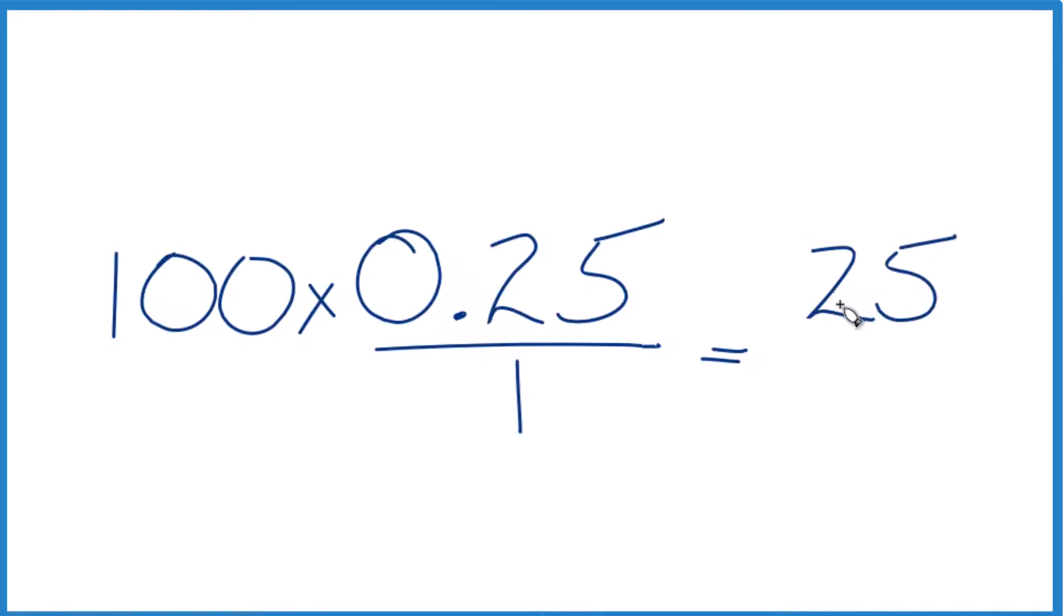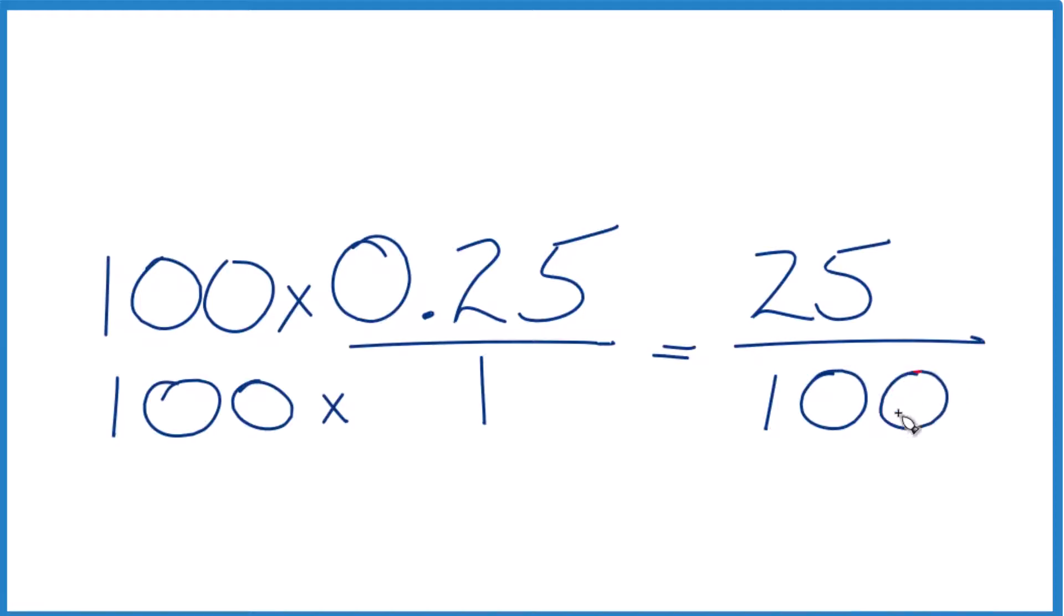But when we do this, we did it to the numerator, we also have to do it to the denominator. So we'll multiply the denominator here times 100 and that gives us 100 times 1 is 100. And now we have our fraction. We can do this because if you think about it, 100 divided by 100, that's just 1, so we're multiplying by 1, no problem.